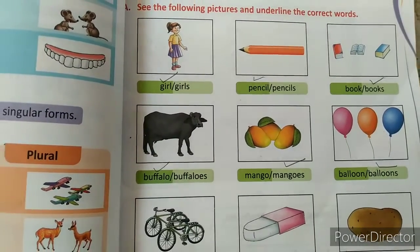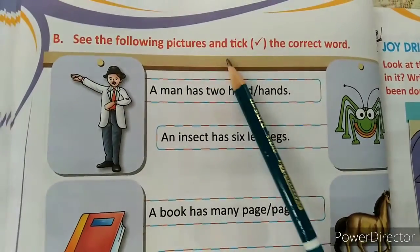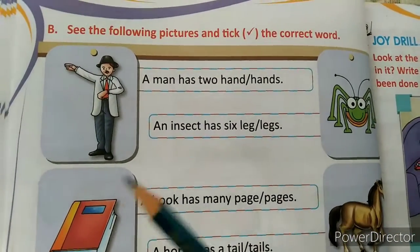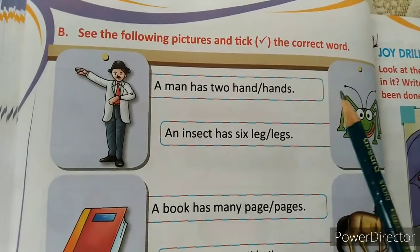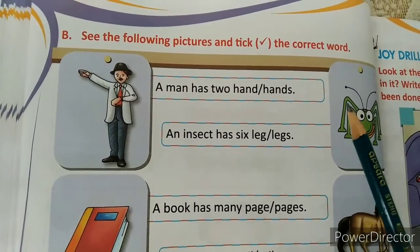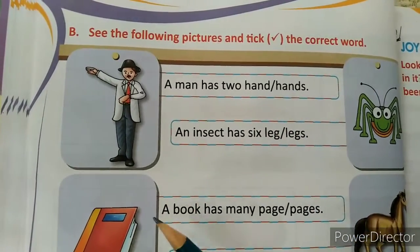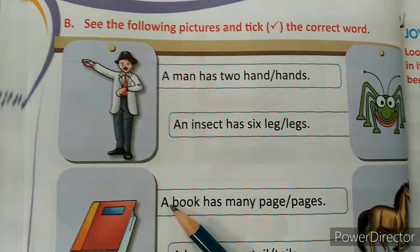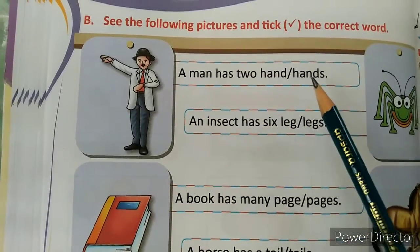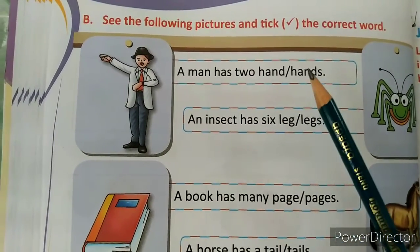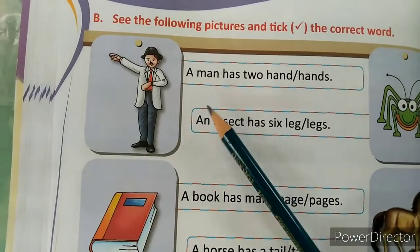Now turn to the page. Exercise B: see the following pictures and tick the correct word. So we have to first see the picture, then tick the correct word. In the exam, you won't have pictures. If this exercise comes in the exam, it will be written only, so you have to read it carefully and tick the correct answer.